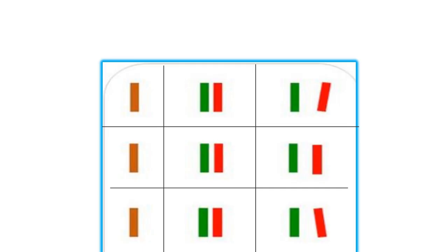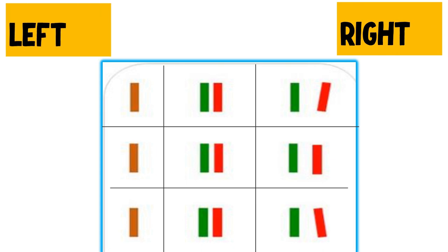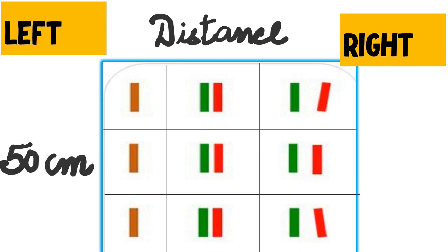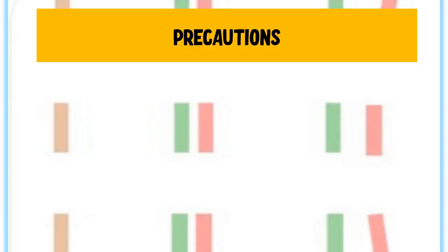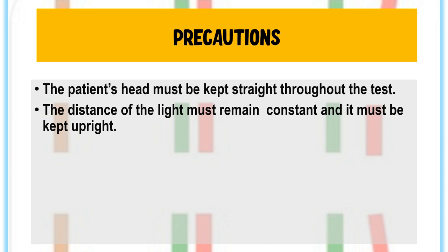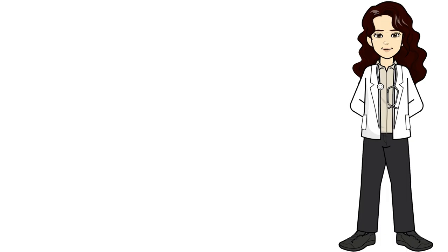Marking of the diplopia chart: our right is the patient's right and the right side of the chart. Mark the distance at which testing is done — usually 50 centimeters, sometimes 1 meter. Precautions: keep the patient's head straight throughout the test. The distance of the light must remain constant and always kept upright — do not tilt the light, as this will cause the images to appear tilted. Once diplopia has been analyzed in the primary position, check all nine positions of gaze in turn.